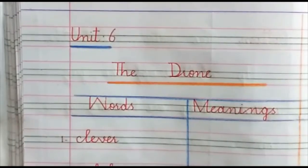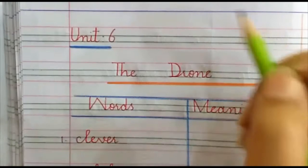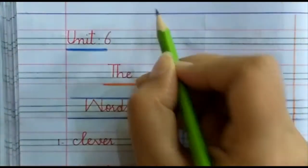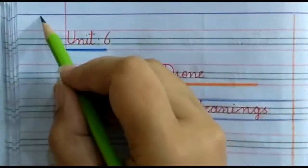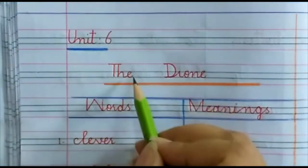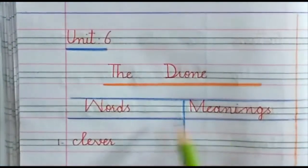Assalamu alaykum class. Today we are going to do our new unit of English A, unit 6, The Drone, from second term. First of all, mention CW, date and day, unit 6, The Drone, words, meanings.